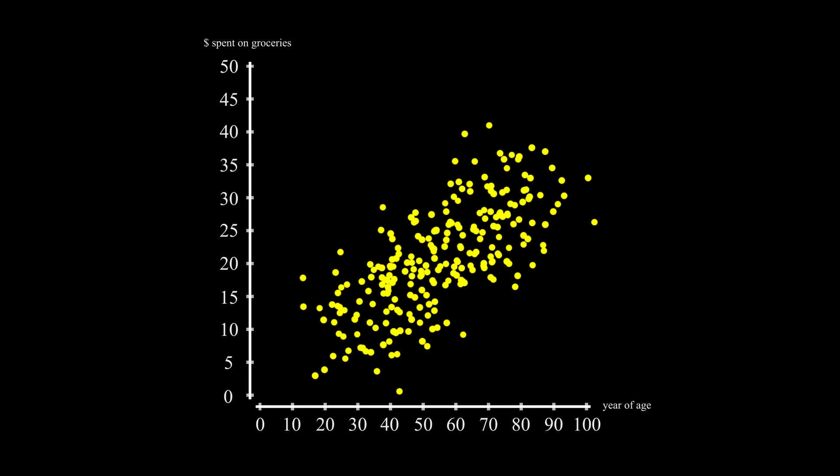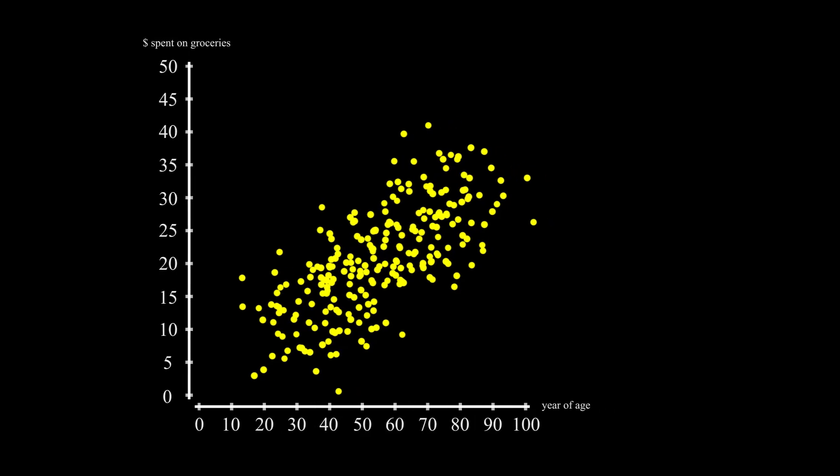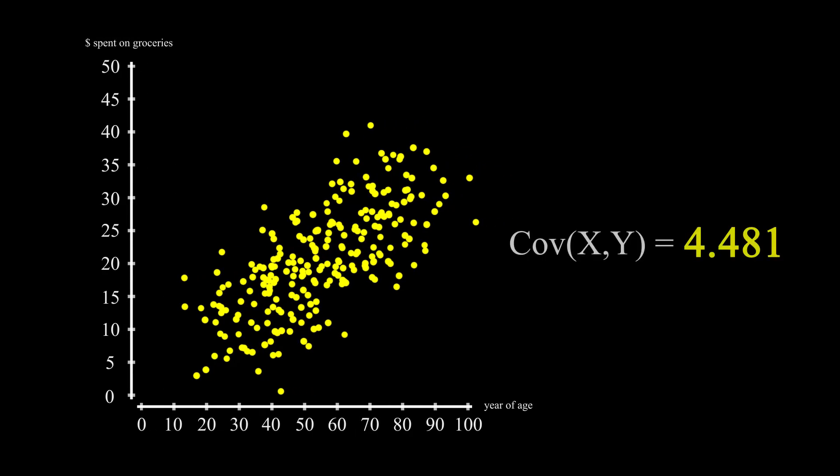If variance tells you how values distribute around the mean value, then covariance of A and B tells you how the variation of the distribution A influences distribution B.